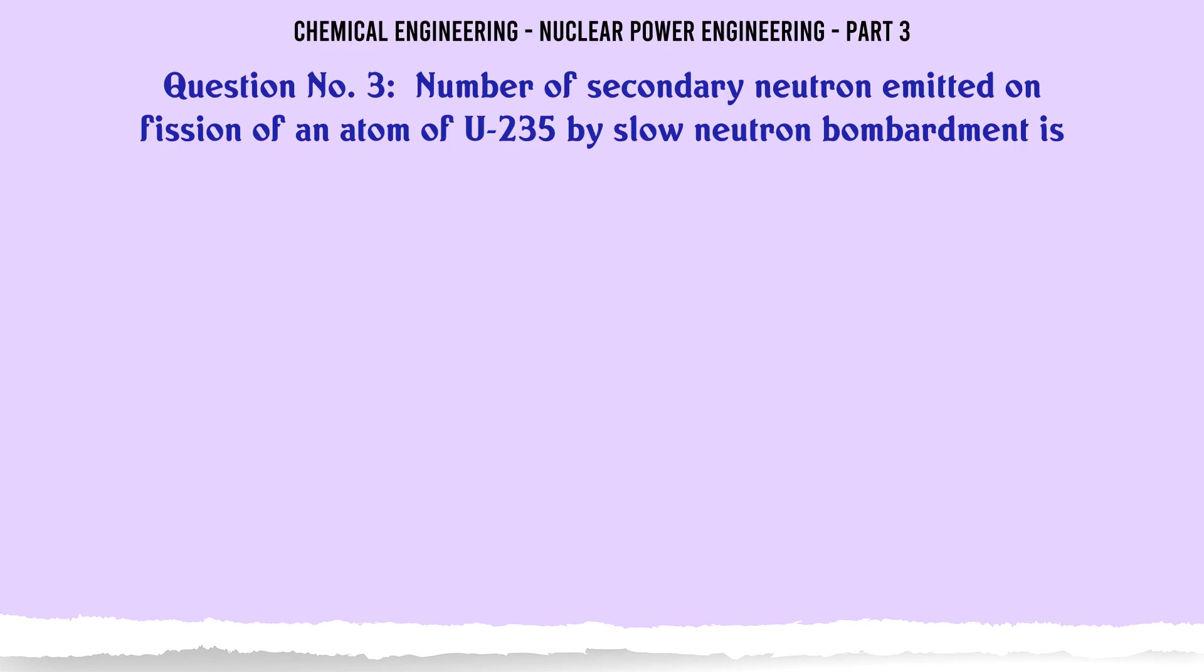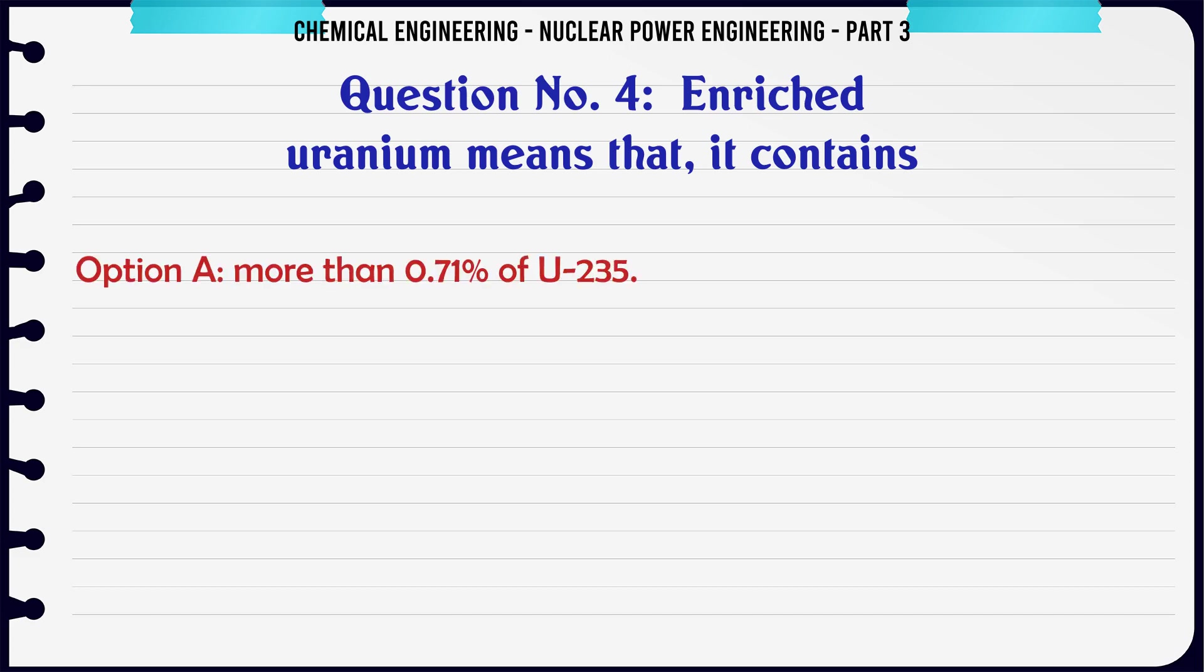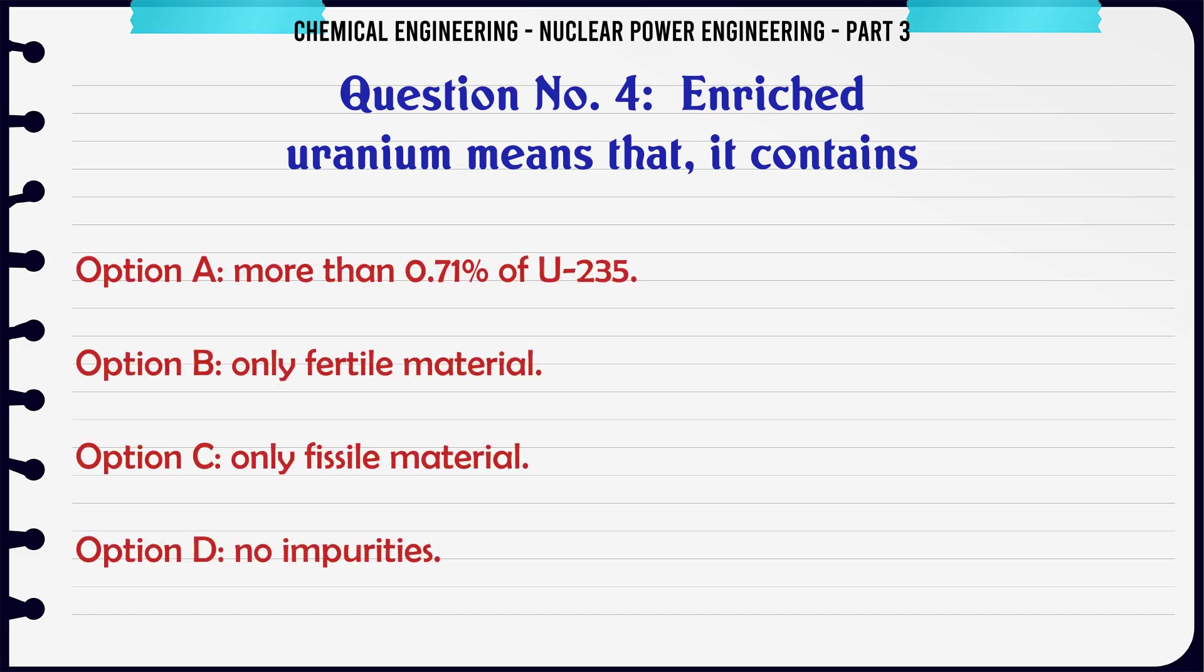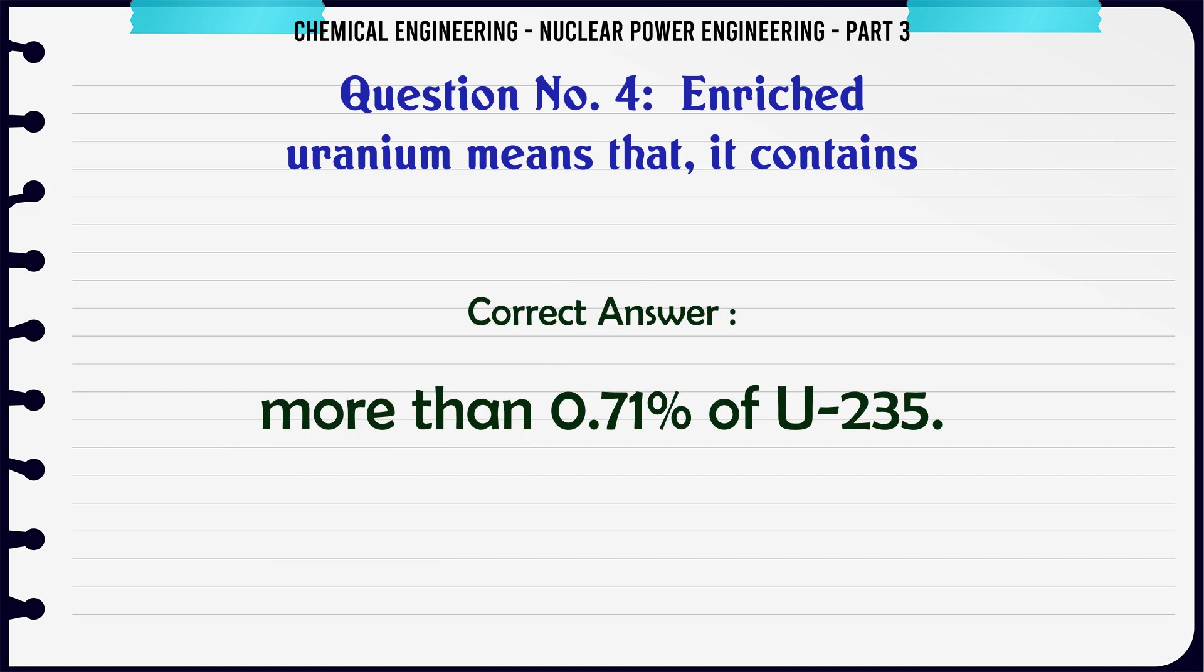Number of secondary neutrons emitted on fission of an atom of U-235 by slow neutron bombardment is 3. Enriched uranium means that it contains more than 0.71% of U-235. The correct answer is more than 0.71% of U-235.